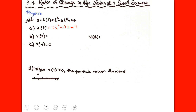For part (b), the velocity after 2 seconds: plug in t = 2, giving 3(4) − 12(2) + 9 = −3 meters per second. The label matters — distance in meters, time in seconds, so the unit is meters per second. Same idea for part (c), velocity after 4 seconds: plug in t = 4 and we get 9 meters per second.